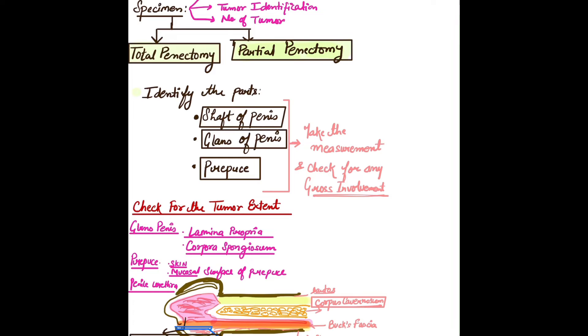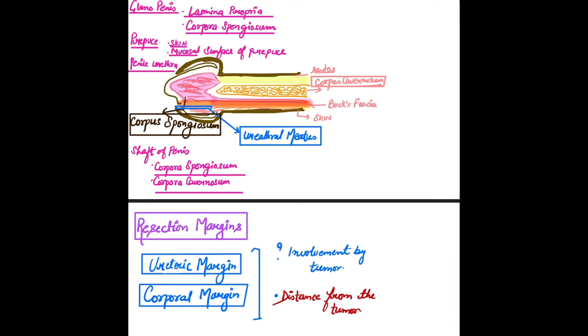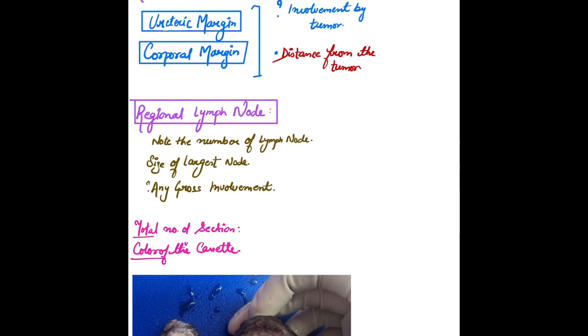The probe will help in orientation. In this case of penile tumor, the resection margin plays an important role for the surgeon—whether the margin is free from tumor or involved.